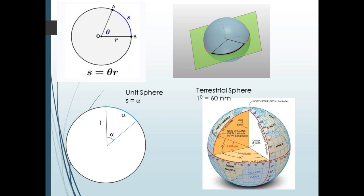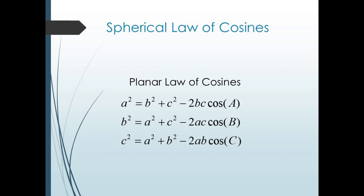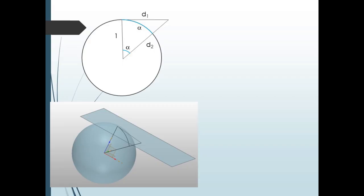Now we're ready to derive our first theorem: the spherical law of cosines. There is, of course, a law of cosines for planar triangles, and we're going to use that to derive our new version. We'll assume for now that we are dealing with a unit sphere, so our sides are all arcs from a unit circle. Consider the projection of a side onto a plane tangent to the sphere at one vertex.